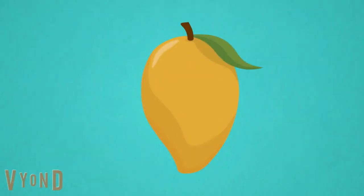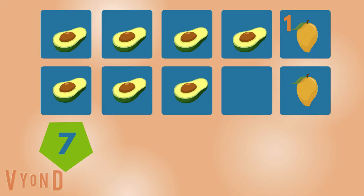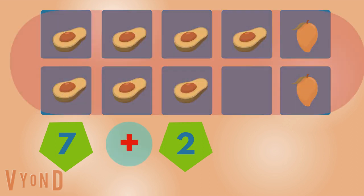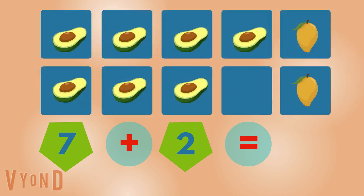Mango. One, two. Two mangoes. One, two, three, four, five, six, seven, eight, nine. Nine fruits.